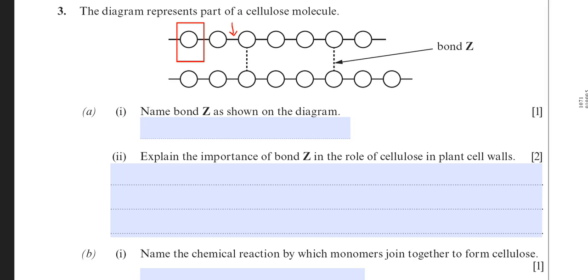There's not just two chains though in cellulose, there's many. But each chain of beta-glucose is bonded together. So you have a bond there called bond Z as a dotted line. That represents a bond that holds the chains together. The first question is asking you to name that very bond.